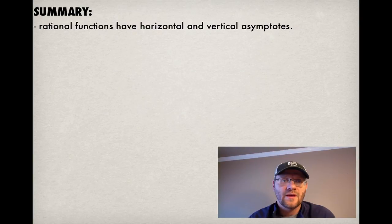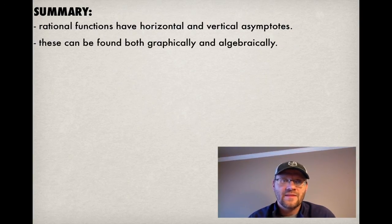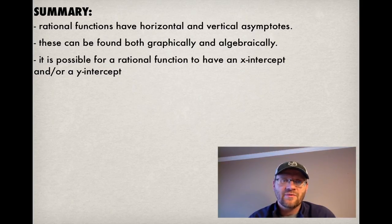So in summary, rational functions have both horizontal and vertical asymptotes. And these can be found both graphically and algebraically. It's possible for a rational function to have an x-intercept and or a y-intercept, but it doesn't necessarily have to have either, depending on where those vertical and horizontal asymptotes are.